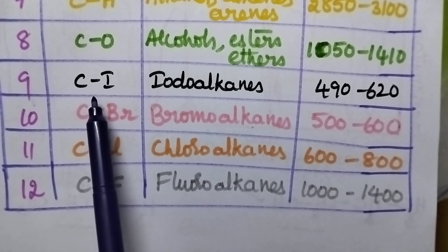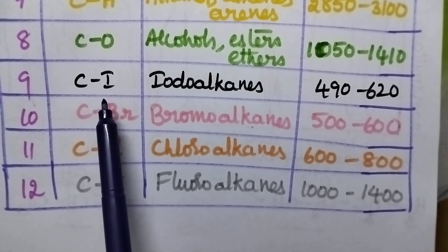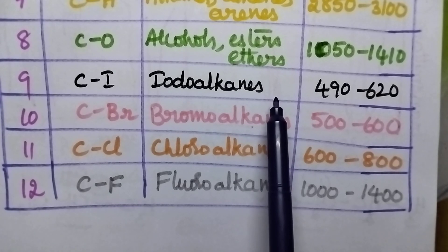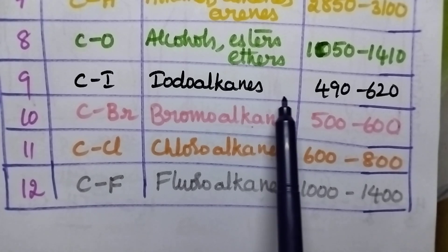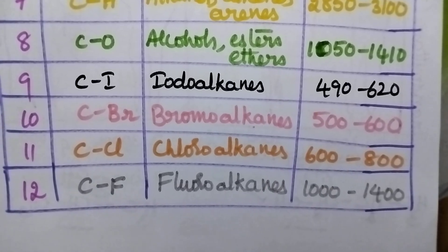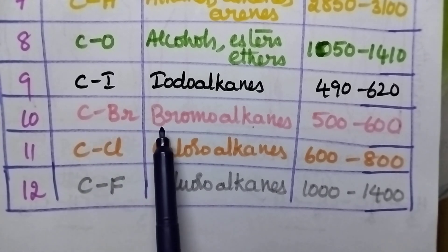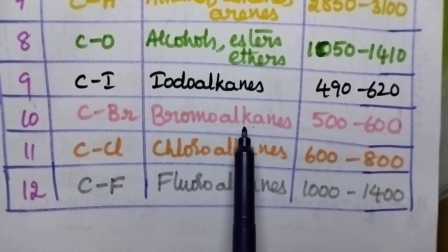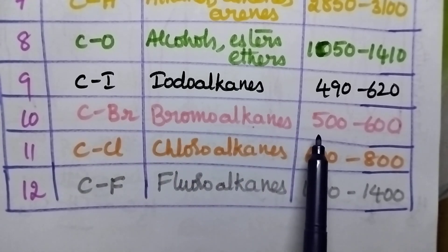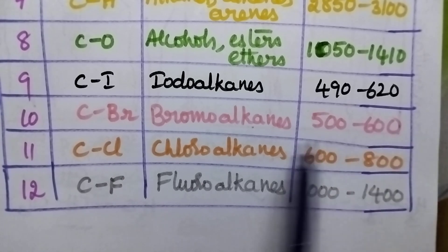Coming to the halo compounds, C-I bonds present in iodoalkanes will show a characteristic absorption around 490 to 620 cm inverse. C-Br group present in bromoalkanes will show a characteristic absorption around 500 to 600 cm inverse.